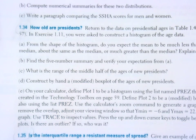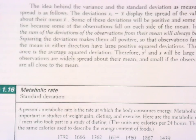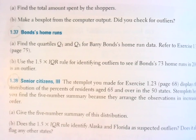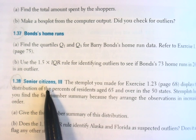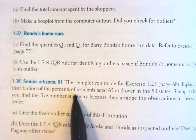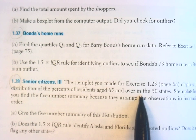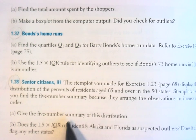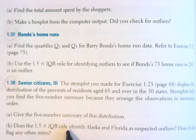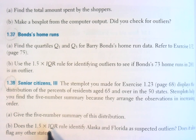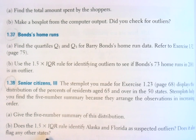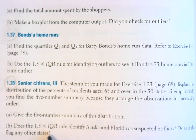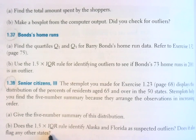The other practice question I wanted you to try was question 1.38. Notice, once again, we are recycling data. In question 1.38, we are reusing the data about the percentage of residents age 65 and over in the 50 states. Your job is to create the five-number summary and then evaluate if Alaska and Florida really are outliers, or if there is any other state that may also be an outlier. All of the information you need can be determined just from looking at the stem and leaf plot.